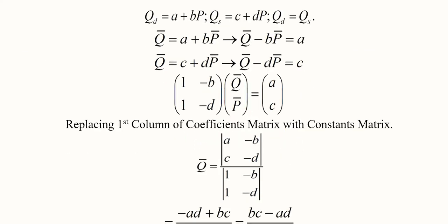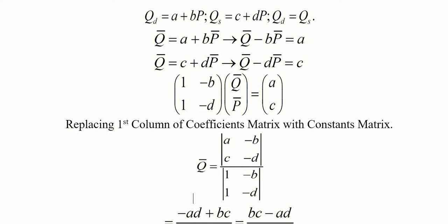For Cramer's rule, we replace the first column with the constants matrix. You can see that minus B and minus d remain as they were, but instead of the first column entries 1 and 1, we now have A and C. This is the new replacement matrix, while the denominator contains the original coefficients matrix.